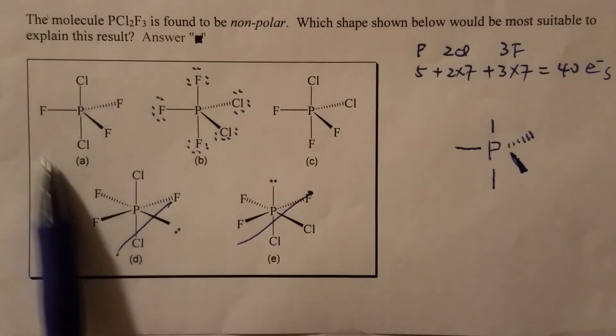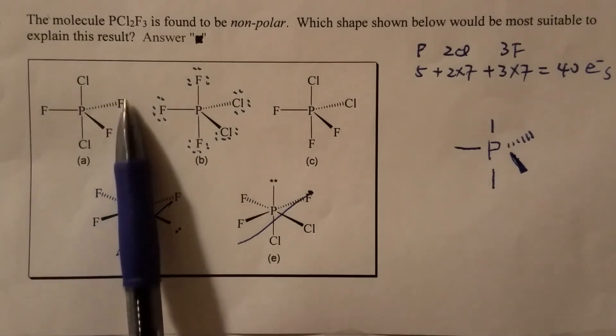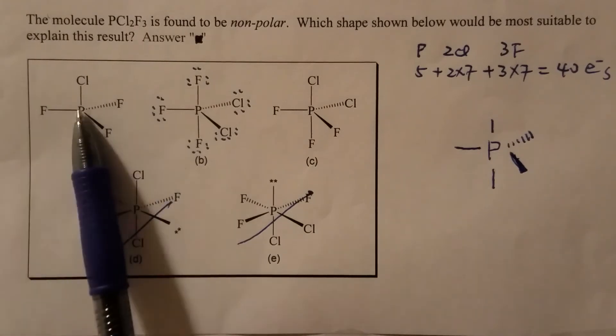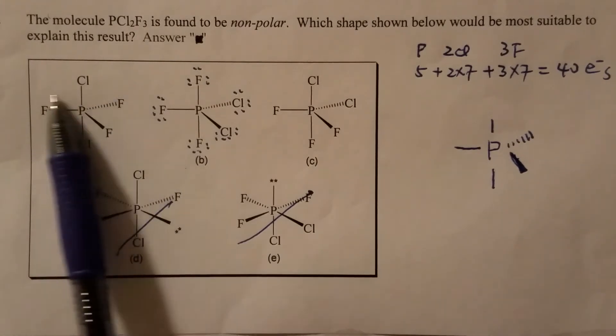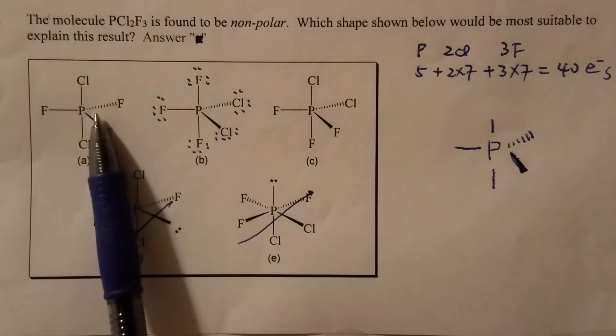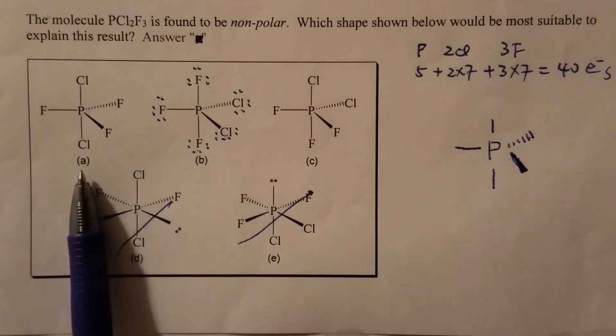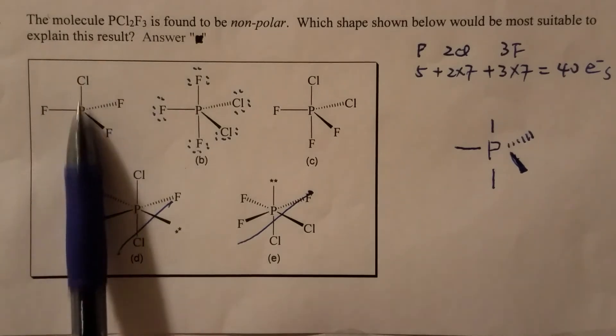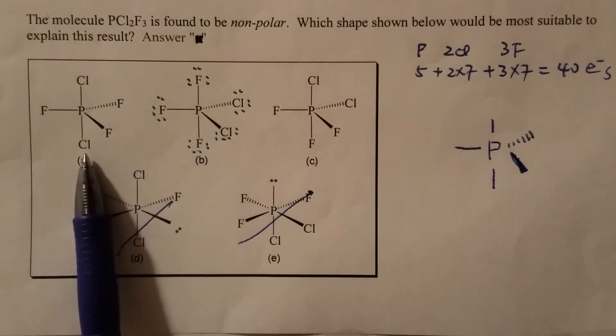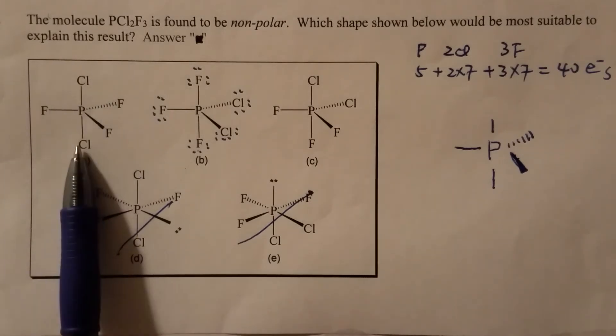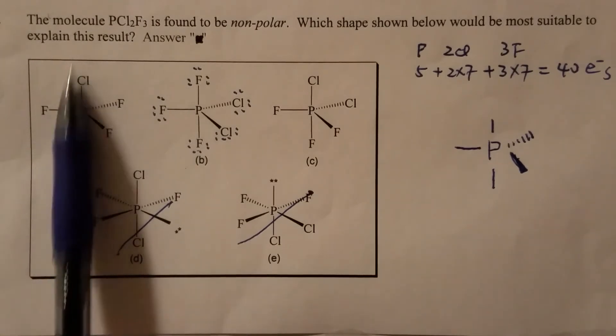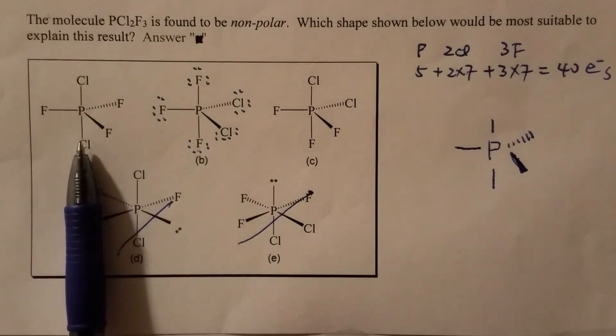So look at the first one, choice A. The equatorial position, we have three identical fluorine atoms, even though each bond is polar, but since it's symmetrical, it's just like a trigonal planar. Therefore, it's non-polar, all the dipole moments are cancelled each other. And then the axial position, that's linear, and with two identical atoms. Therefore, the dipole moments formed along this axis, so they are cancelled each other.